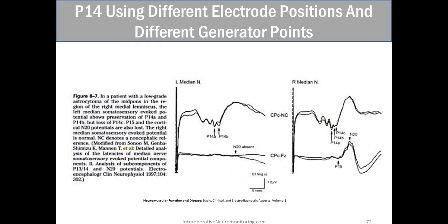An example using different electrode positions: in a patient with a low-grade astrocytoma of the mid-pons in the right medial lemniscus region, the left median SSEP shows preservation of P14A and P14B but loss of P14C, P15, and the cortical N20. The right median SSEP is normal. This illustrates how the P14 can be partially preserved — likely reflecting the cuneate nucleus and dorsal column decussation — even when more rostral lemniscal components are lost.